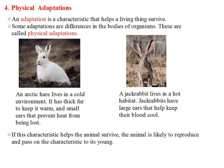Now we are going to talk about animal adaptations. By definition, an adaptation is a characteristic that helps a living thing survive. Some adaptations are differences in the bodies of organisms, and that's why we call them physical adaptations. If we look at the picture of the Arctic animal here, we notice that it lives in a cold environment. We can see that it has thick fur to keep it warm, and it has small ears that prevent heat from being lost.